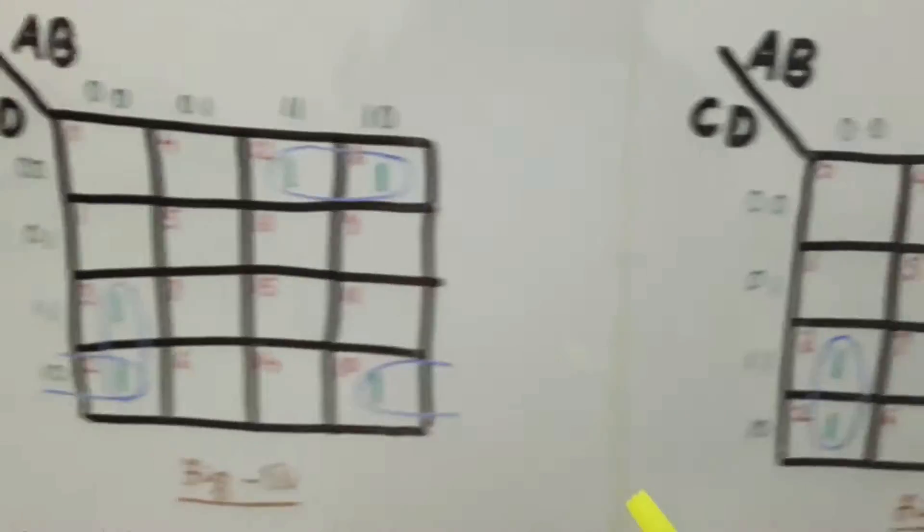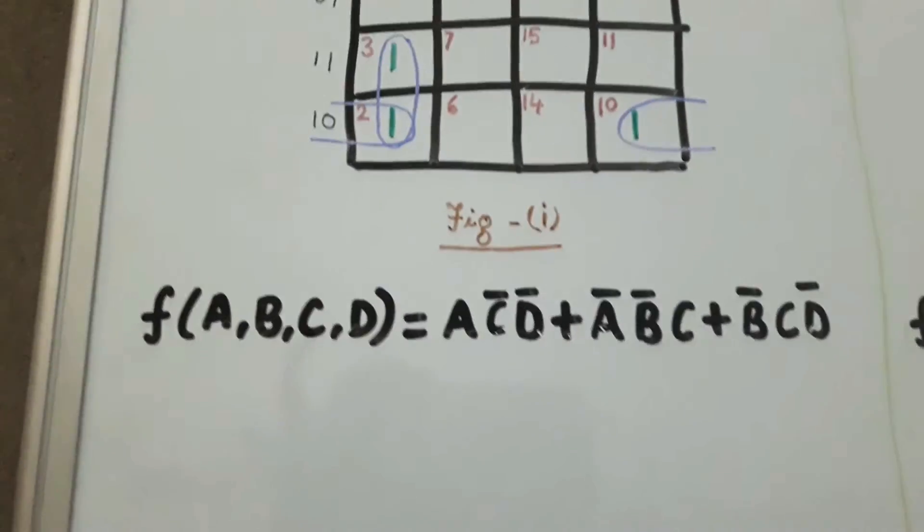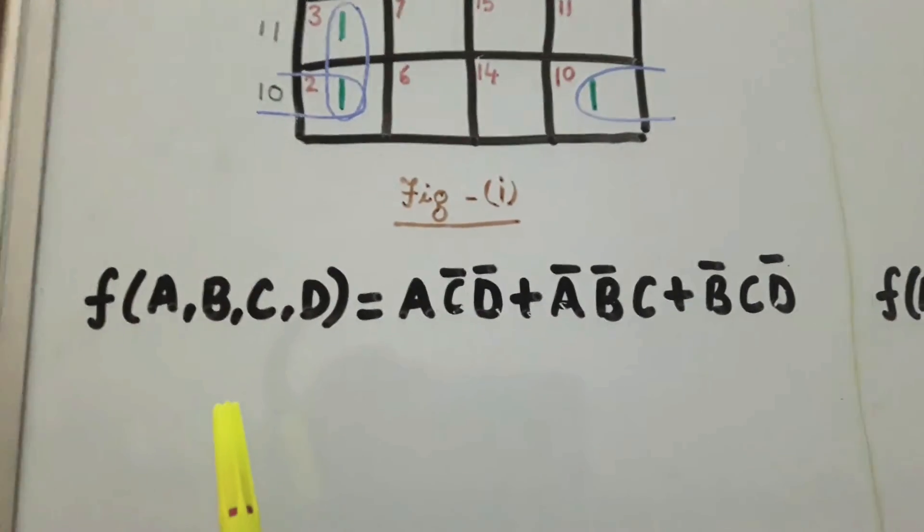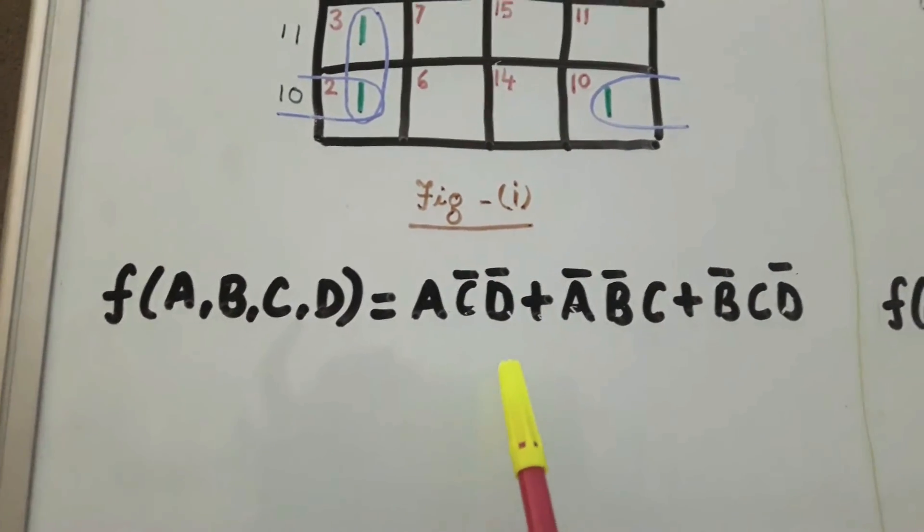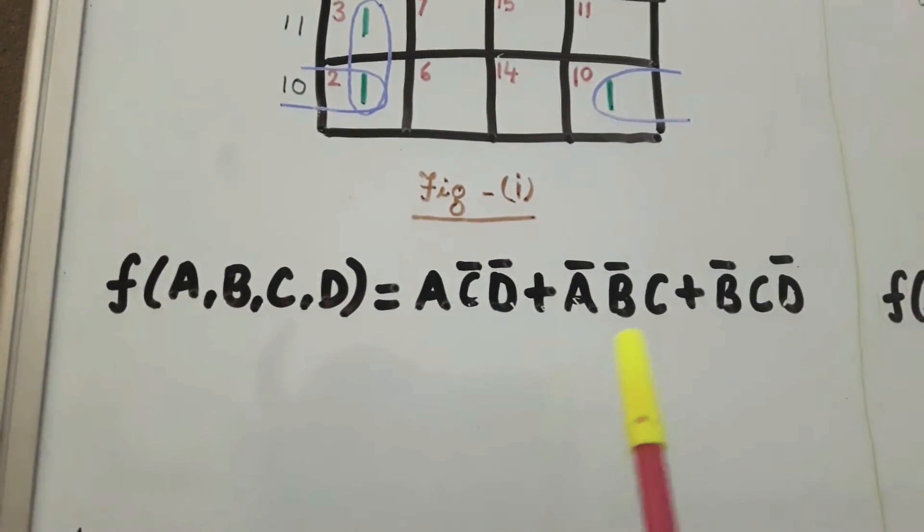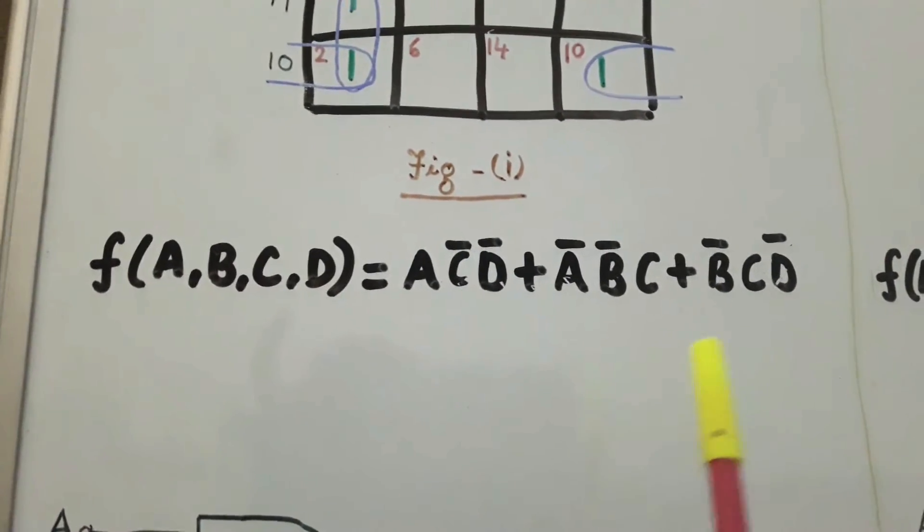Now if we express the function in figure 1 in the sum of products form, we will get the expression F(A,B,C,D) equals A̅C̅D̅ plus A̅B̅C plus B̅CD̅.